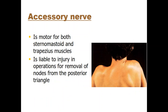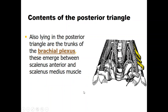The accessory nerve is motor to the sternomastoid and trapezius muscles. Injury to the accessory nerve leads to paralysis of the ipsilateral trapezius and sternomastoid. We can examine the integrity of the nerve by asking the patient to shrug their shoulders — on the normal side the shoulder elevates, while on the paralyzed side the patient cannot elevate or shrug. This is a standard clinical examination for accessory nerve integrity.